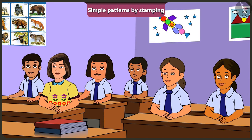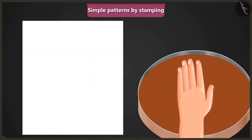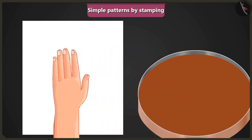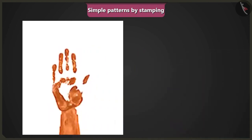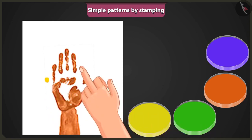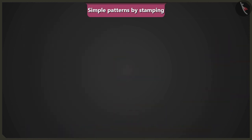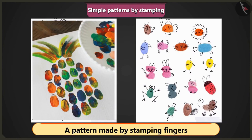Ma'am, how can I create a picture if I don't have anything to use as a block or a stamp? Jimmy, it is very easy. First of all, either soak your hand in colour or apply some colour on your hand, then stamp it on a paper. Now dip one finger in yellow colour and stamp it, then dip the rest of your fingers in different colours and stamp them. What do you think this is? Wow ma'am, this is a picture of a tree! Yes, you are right, Jimmy. Look at these patterns — they were made by using fingers as stamps.